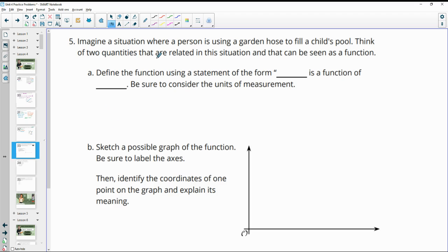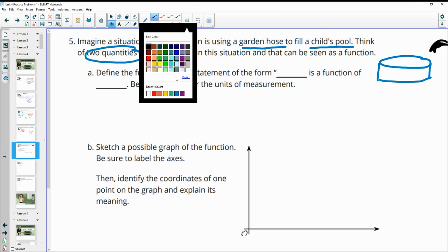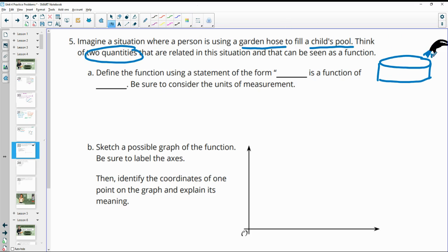Number 5, imagine a situation where a person is using a garden hose to fill a child's pool. Think of two quantities that are related in this situation. So if we're filling a pool with a hose, we've got some type of child's pool. And then we are using a hose to fill it. So our hose is going to have water. And so we're going to be filling this pool from the hose. So define a function using a statement. So what are two quantities that could be happening here? Well, we're going to be turning the hose on, and then it's going to be filling up this pool.